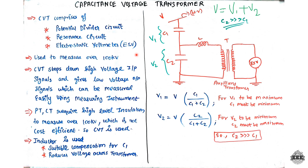For high voltage measurement using current transformers and potential transformers, the main reason they are not preferred is that CT and PT require high voltage withstand insulation at 100KV levels. If the insulation is damaged, the cost of total loss is very high. So for 100KV applications, CVTs are used instead, as the cost is more feasible.